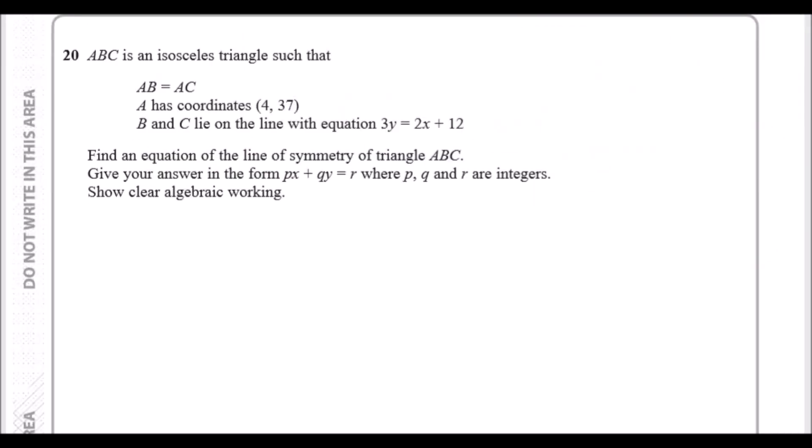Here we are guys, the final question number 20. ABC is an isosceles triangle. Quick recap, isosceles simply means two lengths are the same. AB equals AC. A has coordinates (4, 37), and B and C lie on the line with equation 3y equals 2x plus 12. Find an equation of the line of symmetry of the triangle. Line of symmetry is down here. Quick note, if this is a line of symmetry, that means we have two perpendicular lines. Give your answer in the usual form.